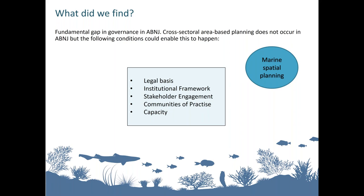Finally, capacity: at present there are no existing institutions with the capacity or mandate to lead cross-sectoral area-based planning in ABNJ. Strengthening national capacity for ocean governance and planning may be one way to support improved sustainable biodiversity planning in ABNJ. Capacity building and the transfer of marine technology is one of the key themes for discussion in the BBNJ process.